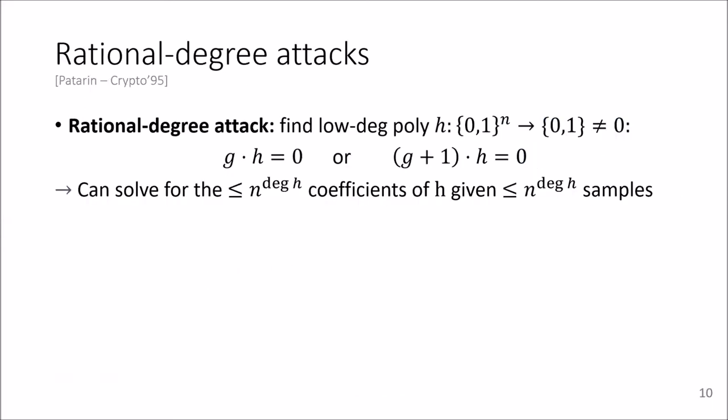In order to see how we overcome this issue, let's take a look at the so-called algebraic or rational degree attacks. The idea behind this attack is that if one can find a low degree polynomial h, such that g times h equals zero or g plus one times h equals zero.